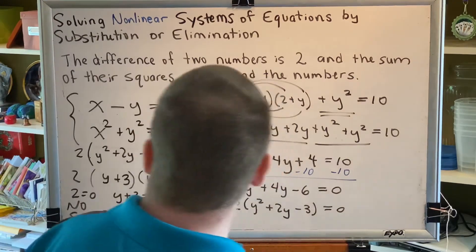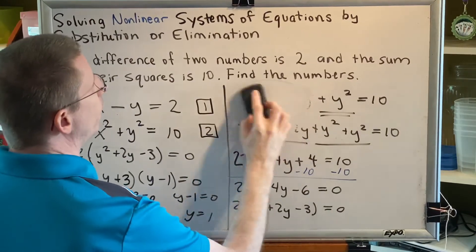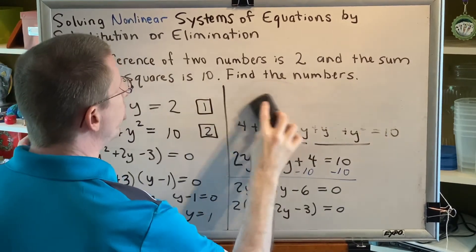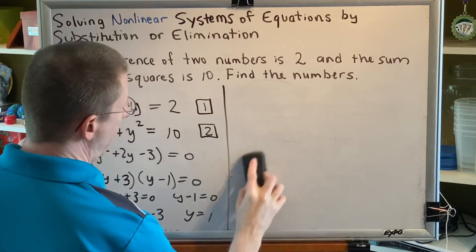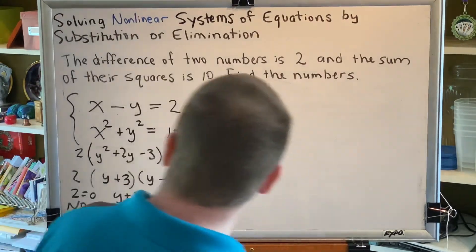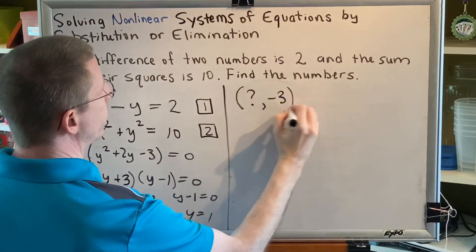Now, this is not the end of the problem. This is a system of equations. We're looking for ordered pairs, x's and y's. Right now, all we have is two y's. So now we have to find the x's that go with those y's.